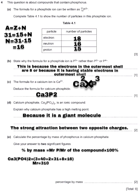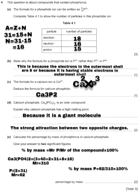Percentage by mass equals the mass of the compound you're looking for over the mass of the whole compound, multiplied by 100%. The mass of phosphorus: we have two atoms of phosphorus, so 2 multiplied by 31 equals 62. Therefore: percentage by mass of phosphorus equals 62 over 310 multiplied by 100%, which gives 20%. We have only 20% of phosphorus in calcium phosphate.